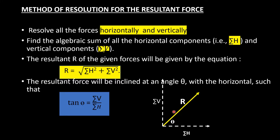This is the result as seen in the angle. Tan θ is equal to sigma V divided by sigma H. θ equals tan inverse of sigma V divided by sigma H. These three steps — sigma H, sigma V, and the resultant equation — are the main items.